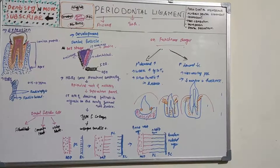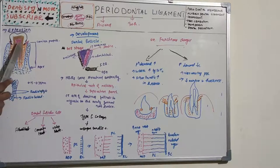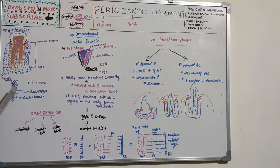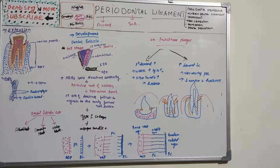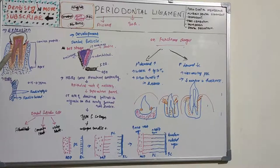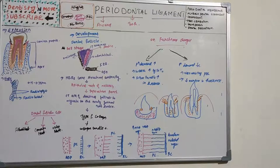Regarding the shape of the periodontal ligament, it is thinnest around the middle third of the root, giving it an hourglass appearance. It is broadened at the coronal and apical sides but thinnest at the middle third of the root.